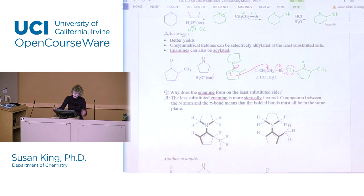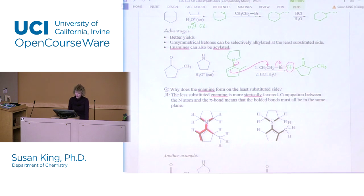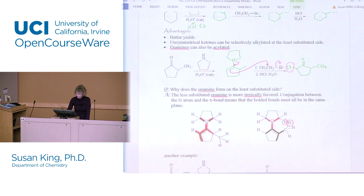Why is this so selective for the least substituted side? All of these bonds are in the same plane. Sterically, it wants to be on the least substituted side. If it were on the other side, there's a problem with those two hydrogens getting in each other's way — if there's any substitution on that one side, it causes steric problems making the enamine. So sterically it's not good on the more substituted side.